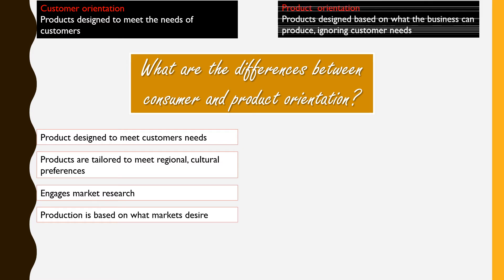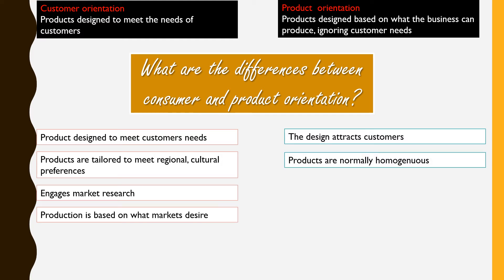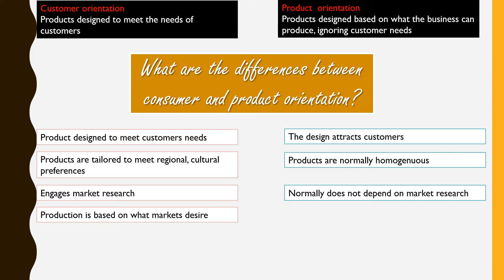In terms of product orientation, businesses who choose this method basically use their capabilities to produce products according to what they see best, and not so much on what customers would really want. The product is designed to attract customers so that they would buy, and at the same time it is normally identical or homogeneous.